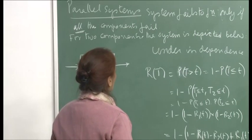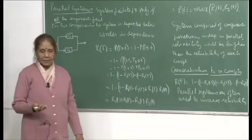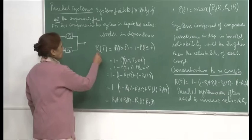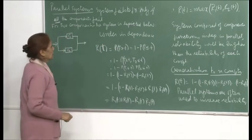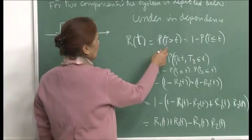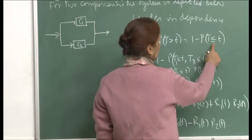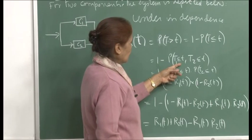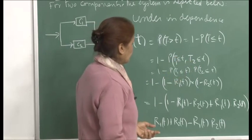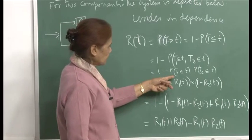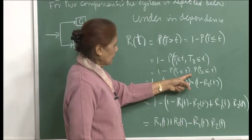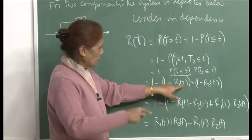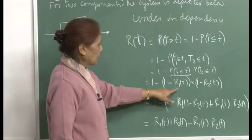Under the independence assumption — which is expected when components function in parallel — to compute the reliability r(t) of the system: this is P(T > t) = 1 − P(T ≤ t) = 1 − P(T1 ≤ t and T2 ≤ t). Both of them must not be functioning by time t. Because of independence, this becomes the product: 1 − P(T1 ≤ t) × P(T2 ≤ t) = 1 − (1 − r1(t))(1 − r2(t)).